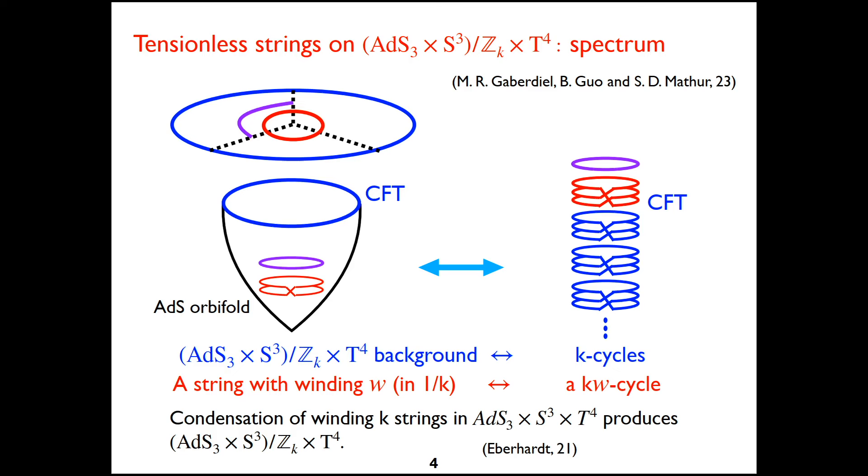And here W can be fractional in units of one over K, and we call this twisted strings. And this construction is an explicit realization of the idea that condensation of winding K strings in AdS3 produces AdS3 orbifold.